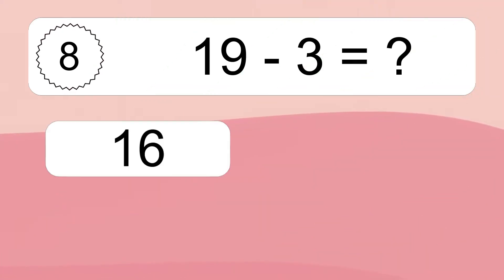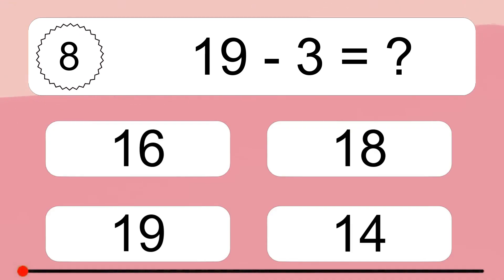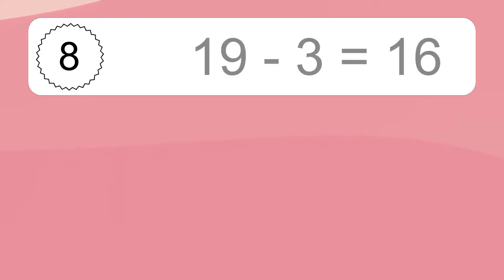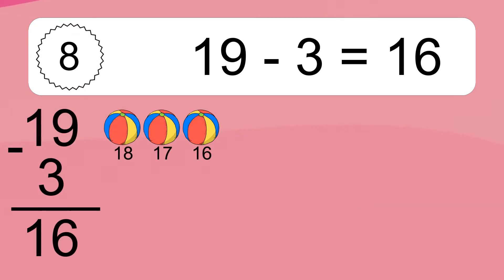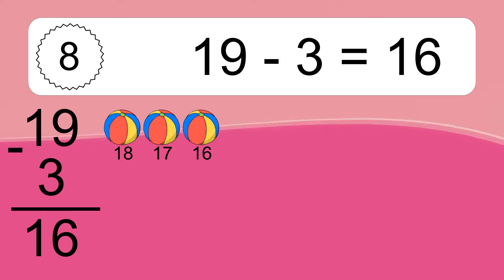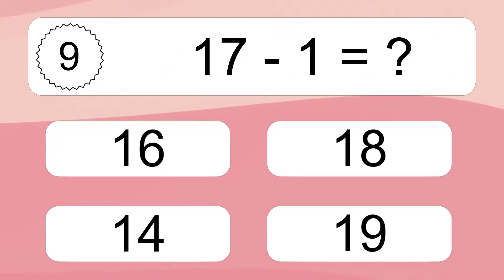19 minus 3 equals what? 19 minus 3 equals 16. Let's count it: 18, 17, 16.